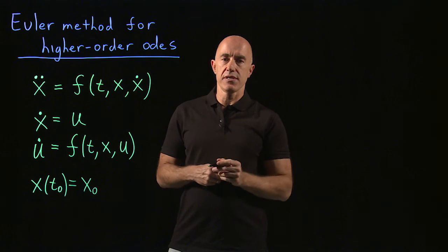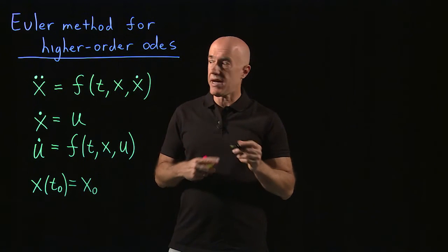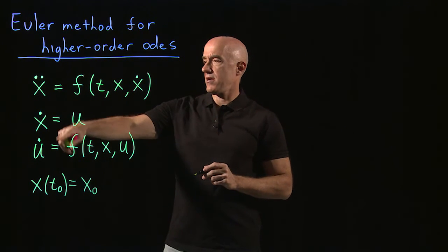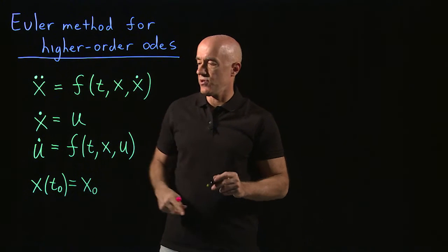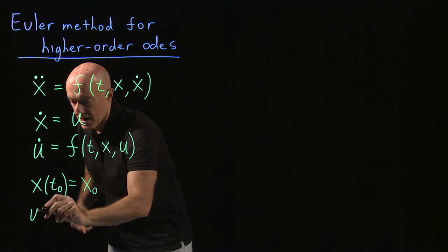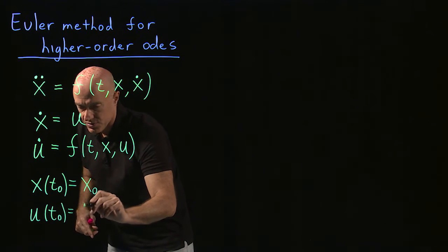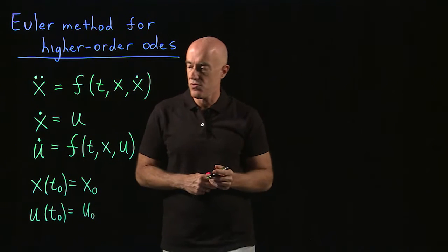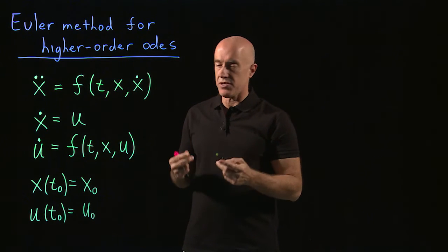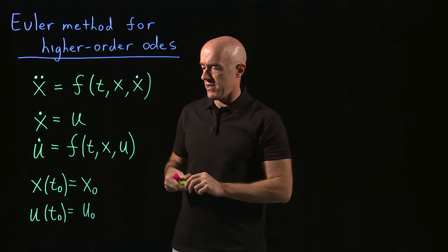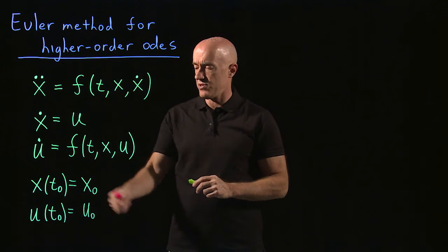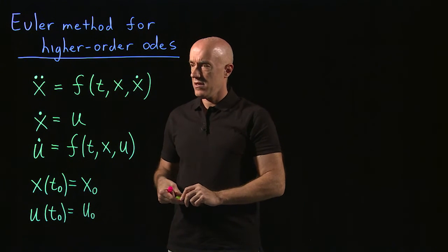And then the other initial condition is on x dot. But here, x dot is just u. So we can say the other initial condition is u of t naught equals u naught. In Newton's application of Newton's equation, that would be the initial position and the initial velocity.